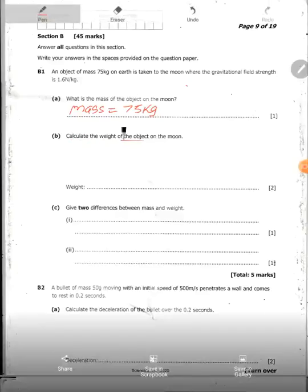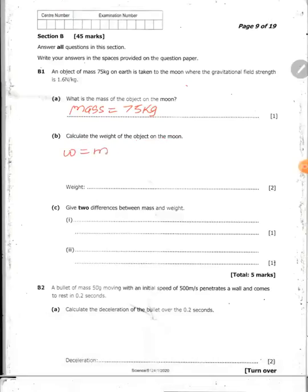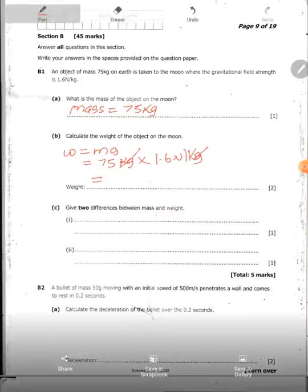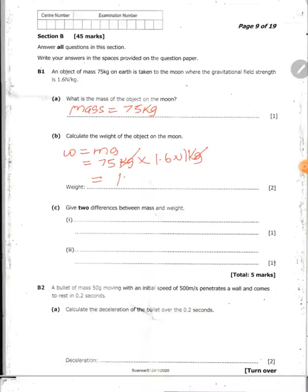And the other one says calculate the weight of the object on the moon. Weight is equal to mass times gravity. Mass is 75 kg. Make sure that your mass is in kg. Gravity, we have 1.6 newtons per kg. So kg and kg cancel. Then we have 75 times 1.6. We have 120 newtons of weight.